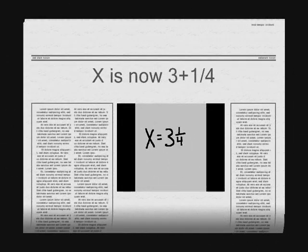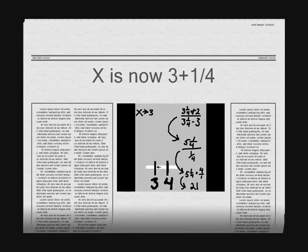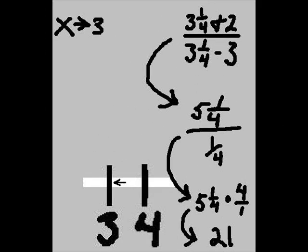Now x continues to move to the left, and x is now 3 and a quarter. Substituting in, we have in the numerator 3 and a quarter plus 2, that becomes 5 and a quarter. In the denominator, 3 and a quarter minus 3 becomes 1 quarter. 5 and a quarter divided by a quarter equals 5 and a quarter times 4 over 1. That now becomes 21.